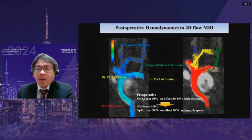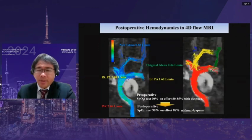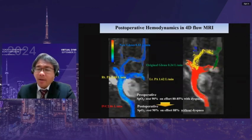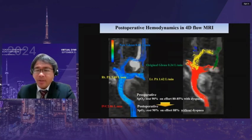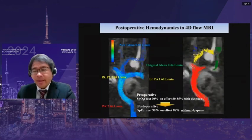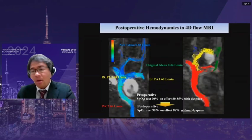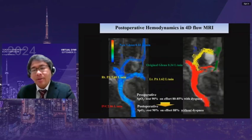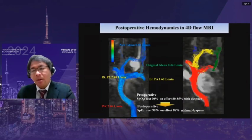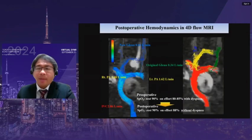Postoperative hemodynamics was quite fine, with balanced distribution of IVC flow to the bilateral lungs, due to the restriction of the original left-side conduit. She still has some cyanosis, but the saturation drop on exercise improved to some extent.